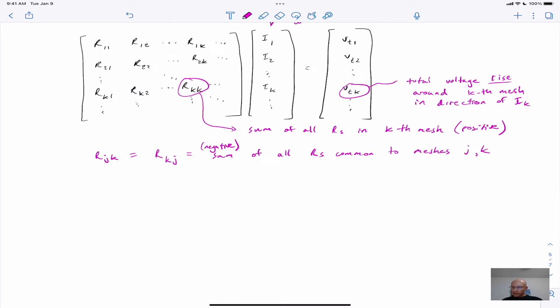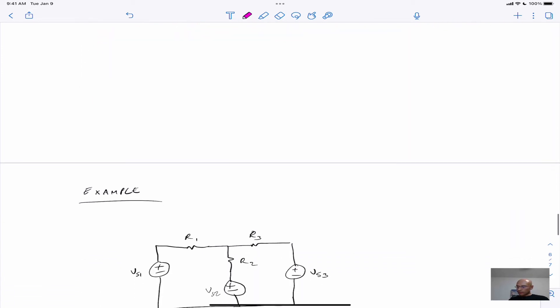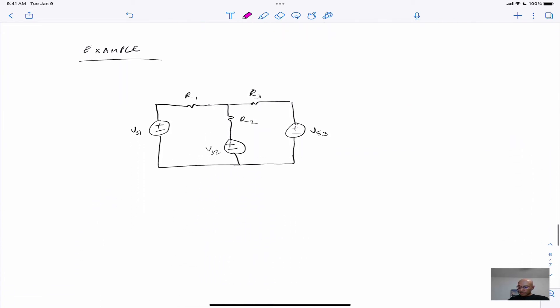And that'll be enough to do a mesh current analysis by inspection. This will also be a good confirmation if you have an eligible problem, that if you did it by a more formal process, you can check things out and make sure that they make sense. A dummy check, as it were. So let's do this example,